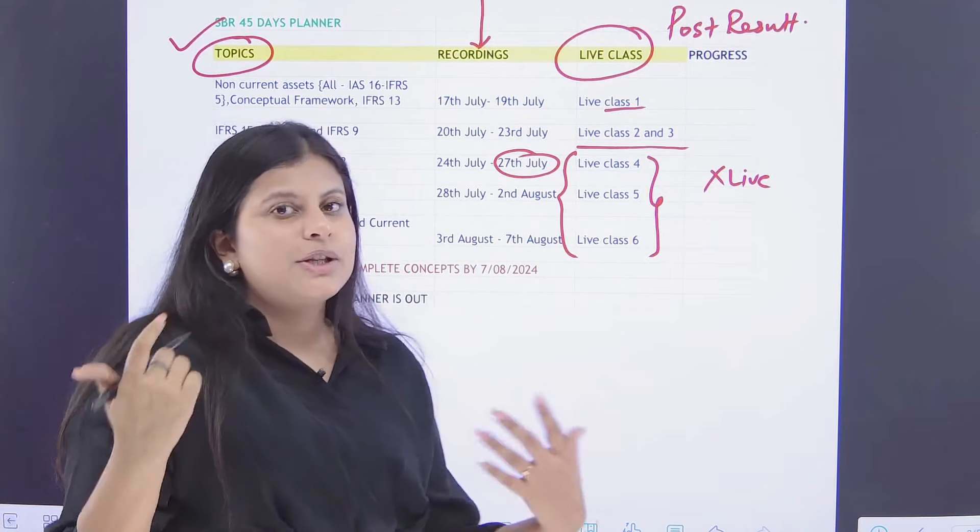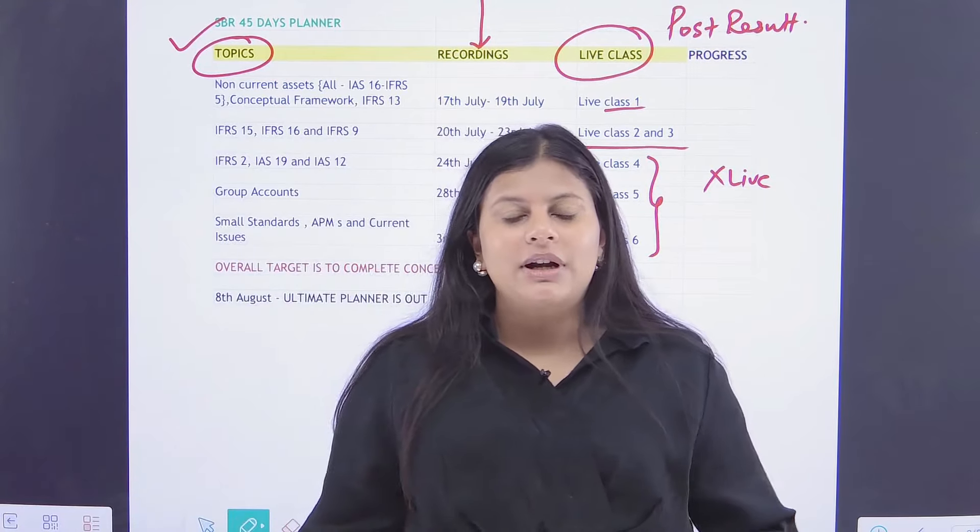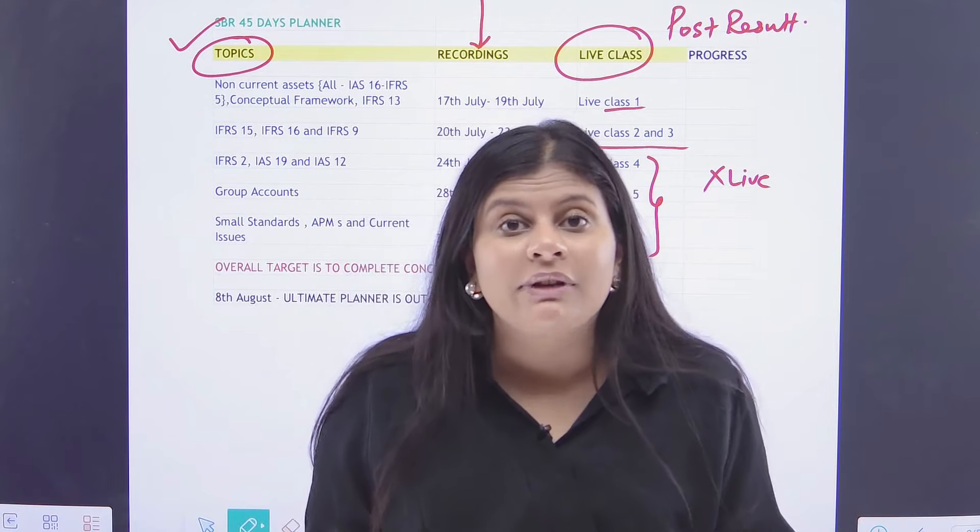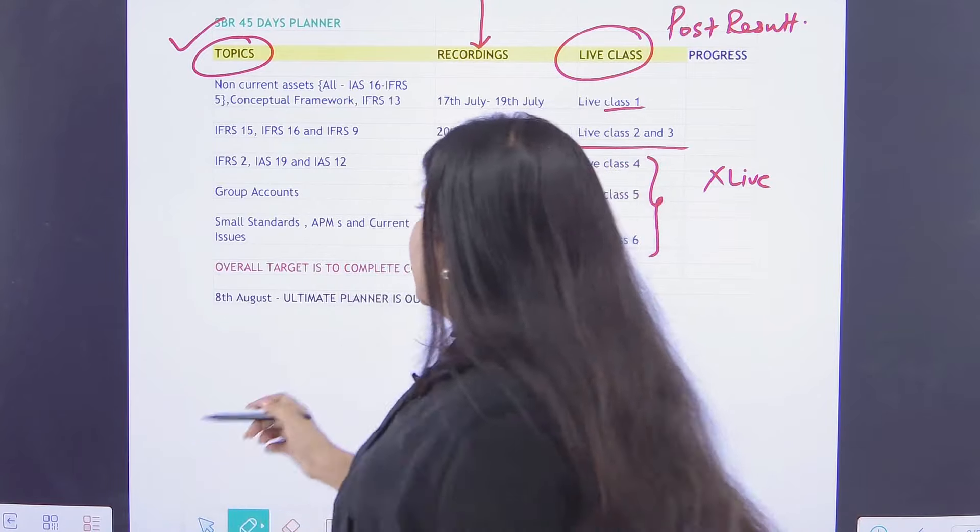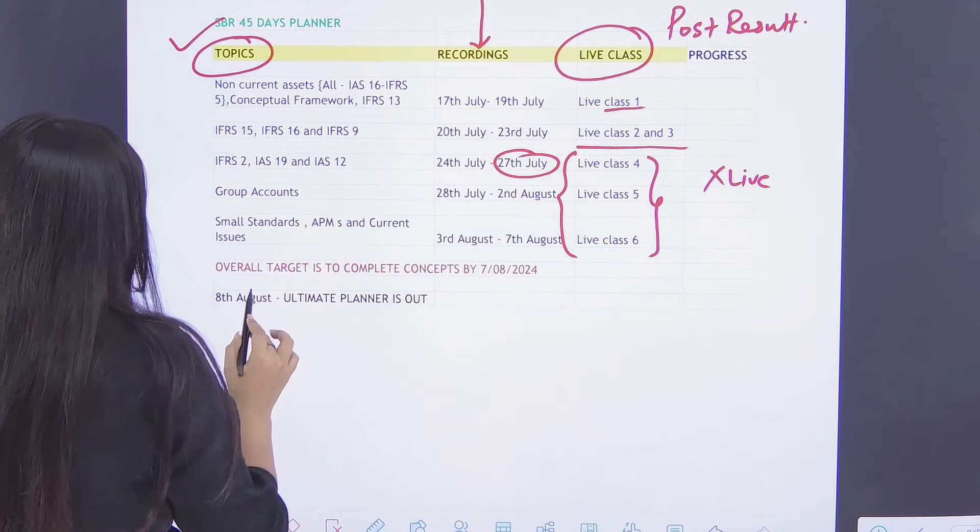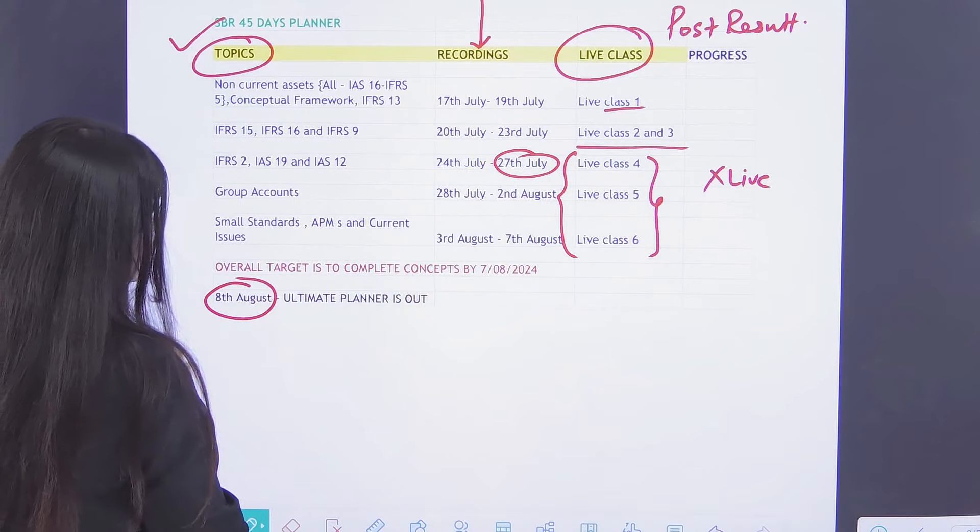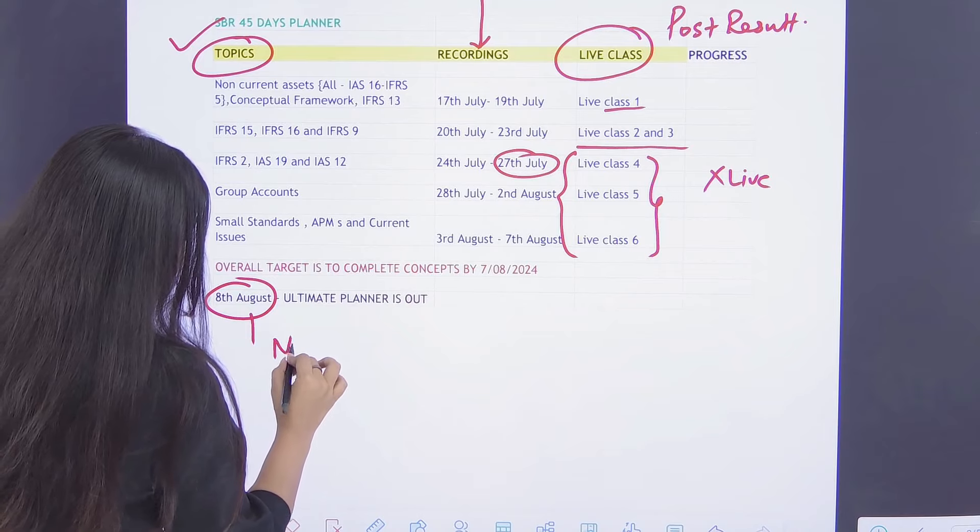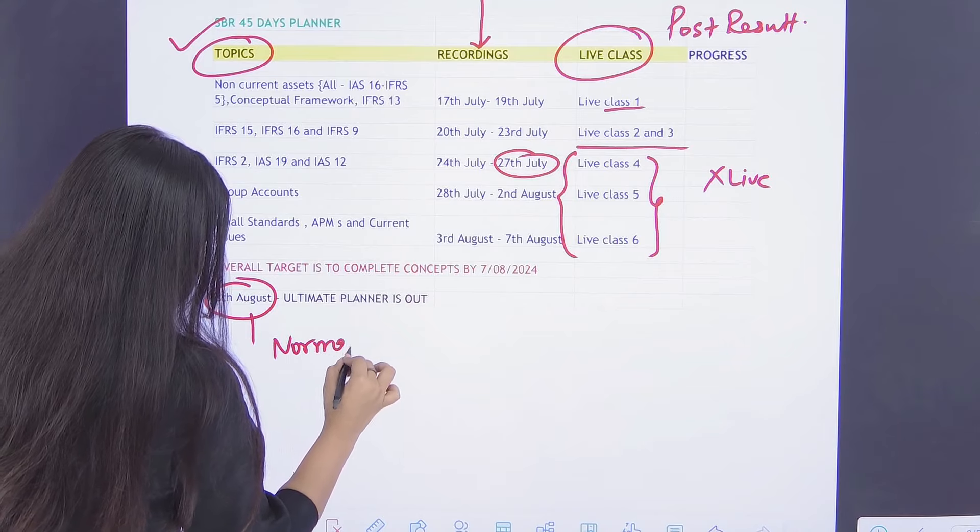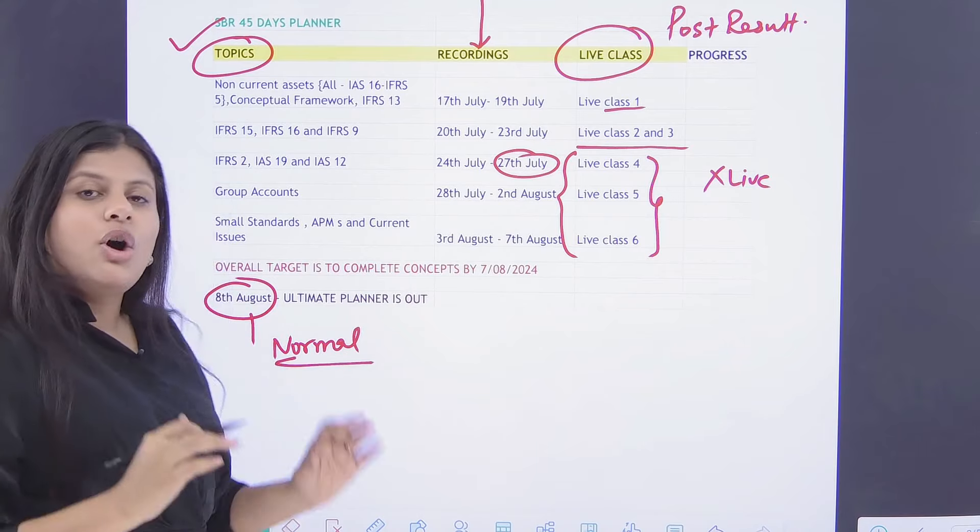So that means it's difficult for you to attend live classes. So you'll also watch the recordings of these live classes. Then you might ask, ma'am, what's the need to enroll? We are not getting access to live classes. Are we not able to see you in live classes? You would. You'll complete this whole set by 8th of August and you will join the normal course, regular course students, the normal batch students on 8th of August.